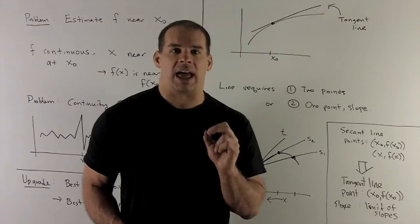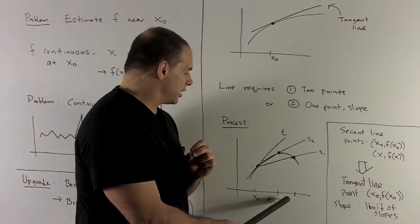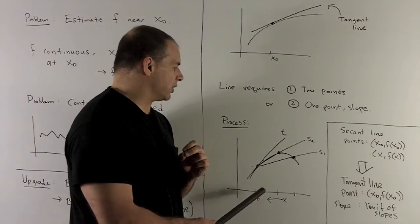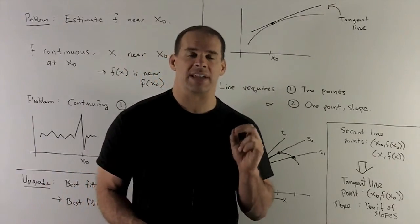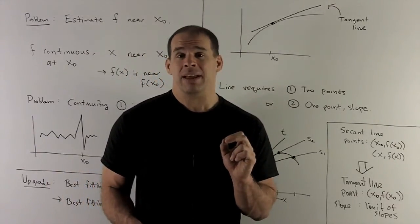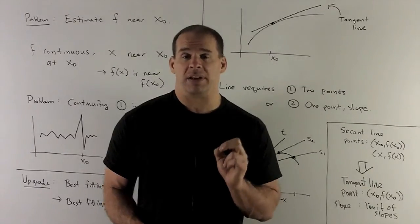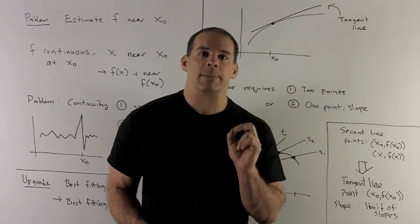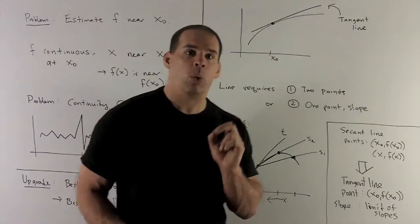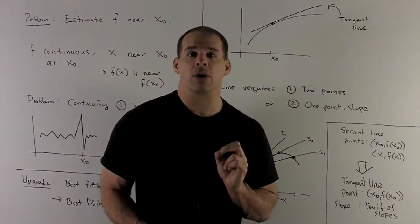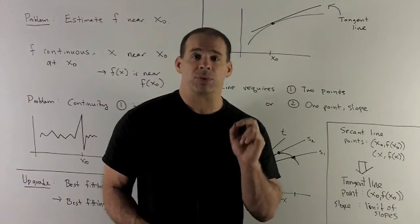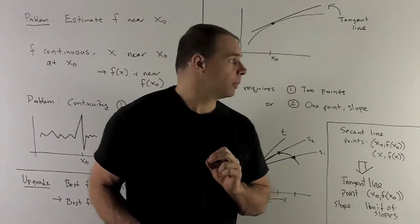Then what I want to do with these secant lines, we're going to let our x get in closer and closer to x0. If that settles on a line, we're going to call that the tangent line, and then that's what we're going to use as our best fitting line. Now the problem here is going to be we have a point that's going to be the point at x0, f of x0 for the tangent line. I have to worry about the slope.